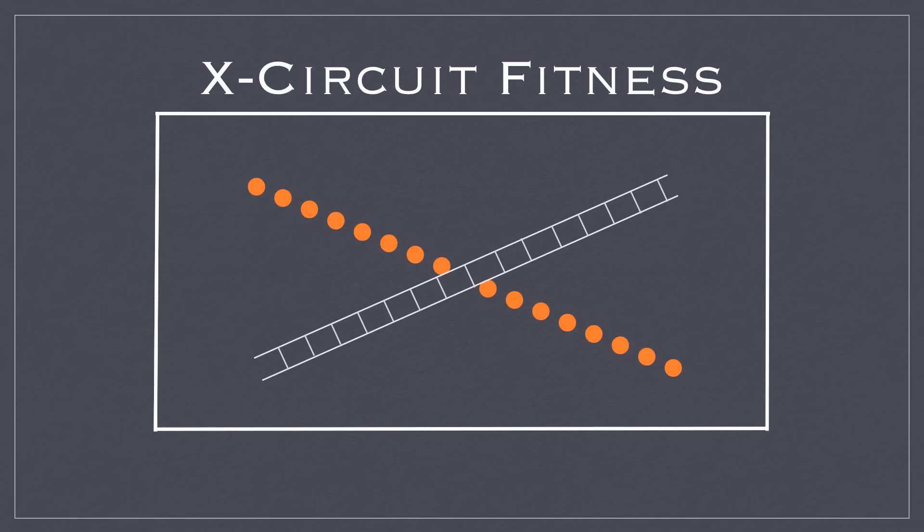So to start, you'll set up your agility ladders and your poly spots in the form of an X in the gym, and that's kind of the basis for this X-Circuit. And then you'll choose six different activities. It can be any choice that you'd like. You can have with equipment or without. Here we have all without.